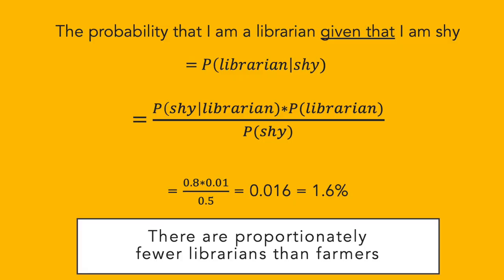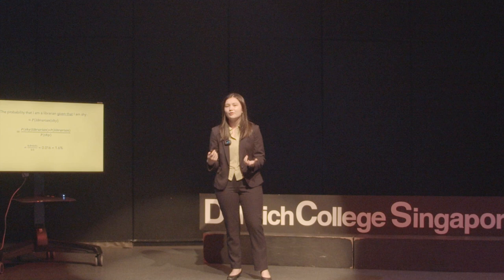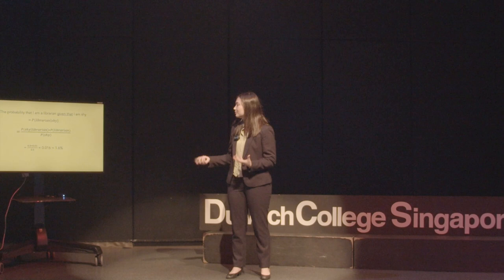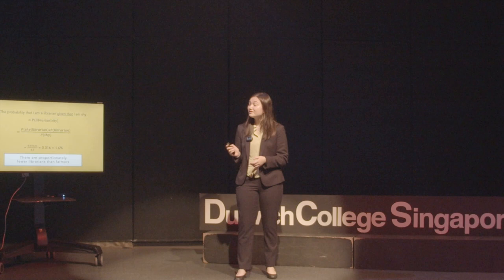We can work this out by inputting the variables into the original equation and making a few assumptions. Most librarians are probably shy, so I'll put that at about 80%. Here's where most people make their mistake — and why most people thought I was a librarian: proportionately, there are so many more farmers than librarians. We'll input this as a ratio of 1 librarian to 100 farmers for simplicity, and then put that over the probability that I'm shy, which I'll set at 50%.